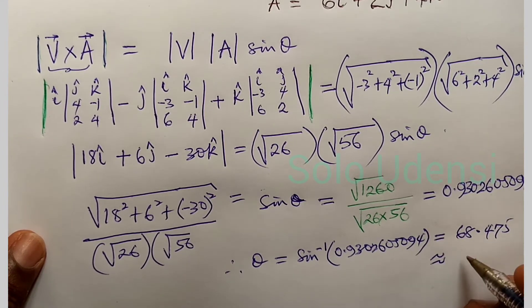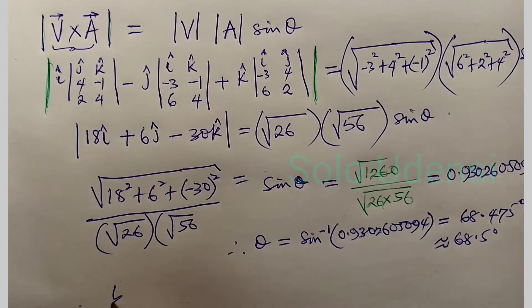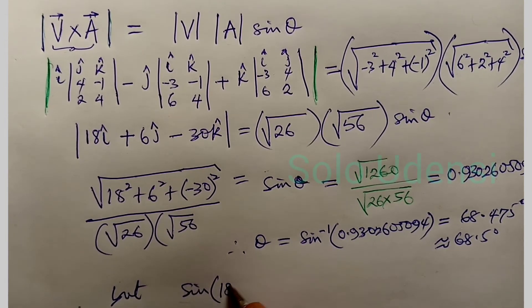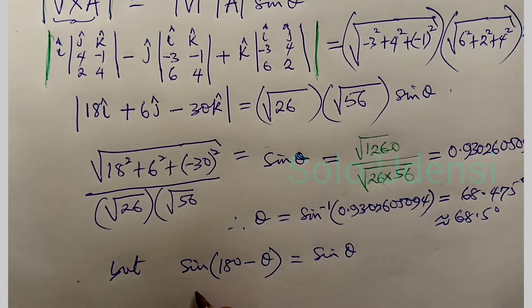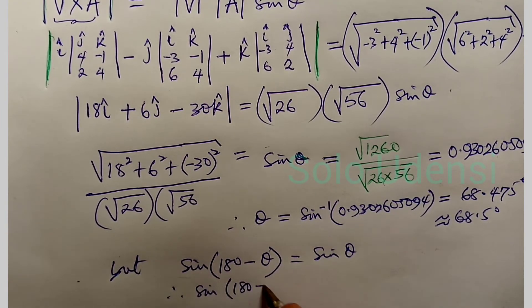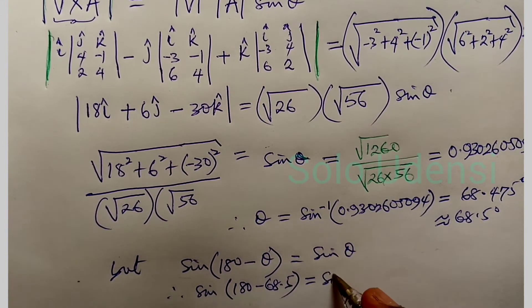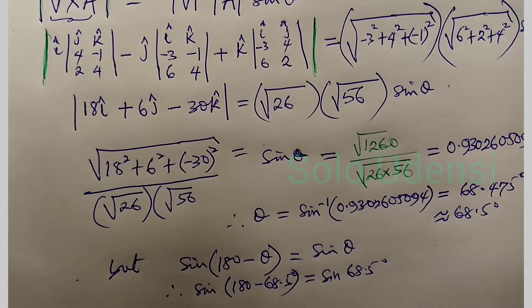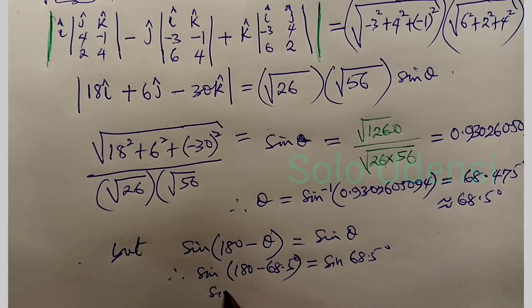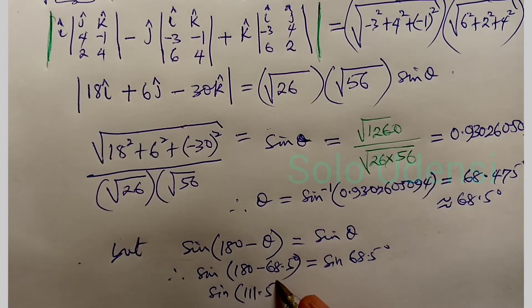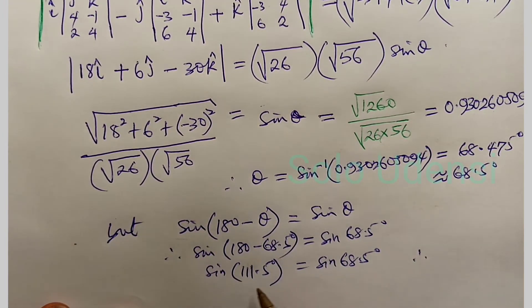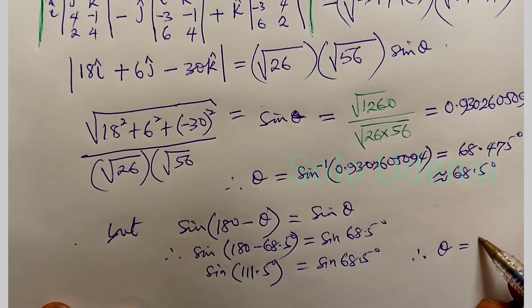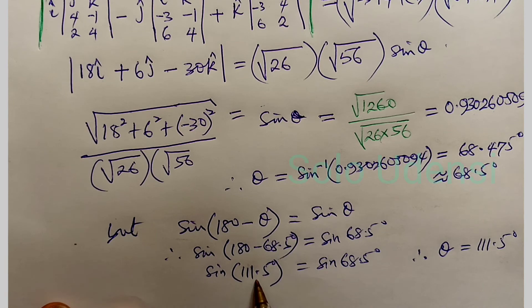sine 180 minus theta is equal to sine theta. Therefore sine 180 minus 68.5 is equal to sine 68.5 degrees. Sine 111.5 is equal to sine 68.5 degrees. You can check it. Therefore, the correct answer from what you have done in the last video using dot product is theta is equal to 111.5 degrees, which means it is in the second quadrant.